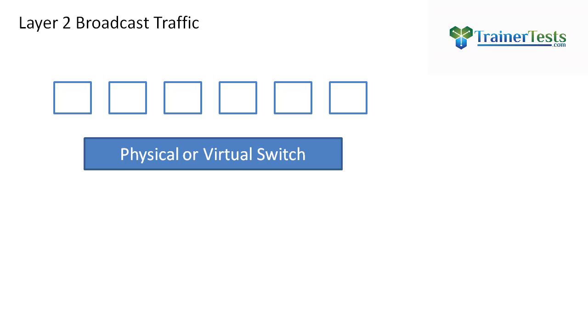So let's take a look at our diagram here, and I've got a bunch of virtual machines. Those little white blocks up at the top, those represent virtual or physical machines, doesn't really matter. And one of those virtual machines or physical machines sends a Layer 2 Broadcast to the physical switch.